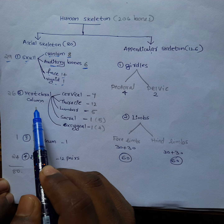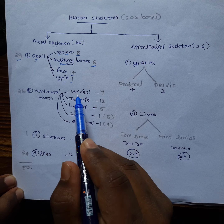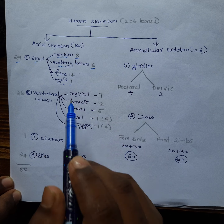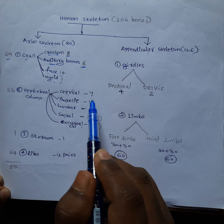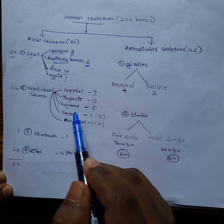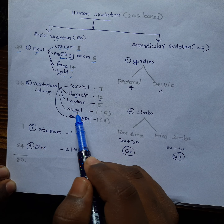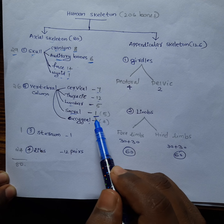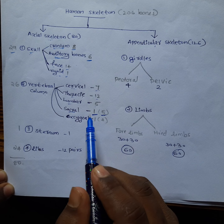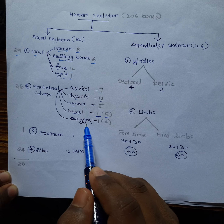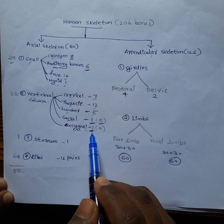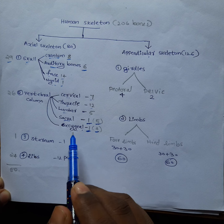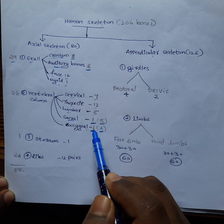Next, I'm taking the vertebral column, which includes cervical vertebra, thoracic vertebra, lumbar vertebra, sacral, and coccygeal. Cervical vertebra will include seven bones, thoracic 12 bones, lumbar five bones. Sacral will be one bone — this one bone is formed by the fusion of five bones, but we will consider it as a single bone. Similarly, the coccygeal will be a single bone, formed by the fusion of four bones. So total there will be 7 plus 12 plus 5 plus 2, which equals 26 bones.